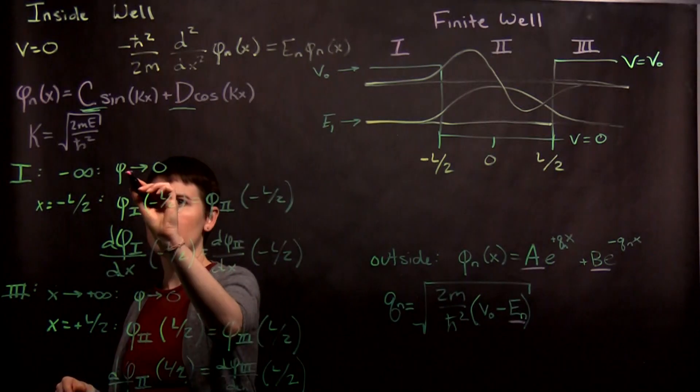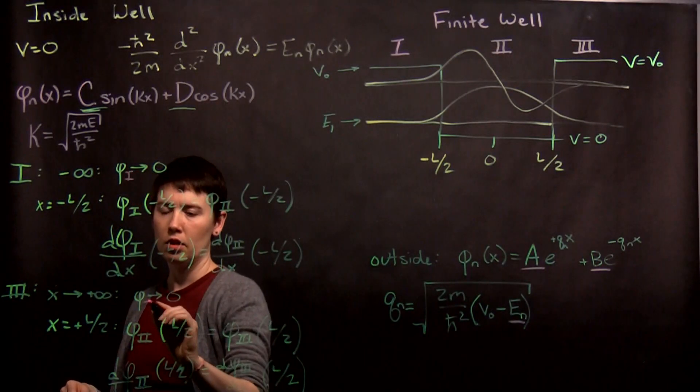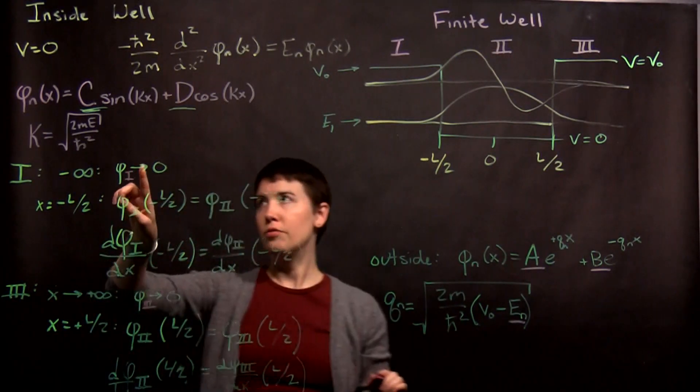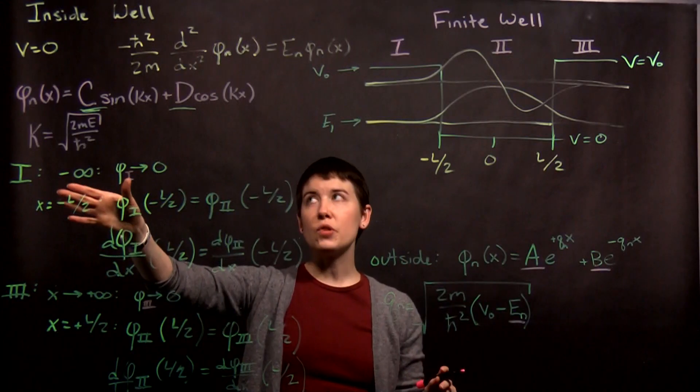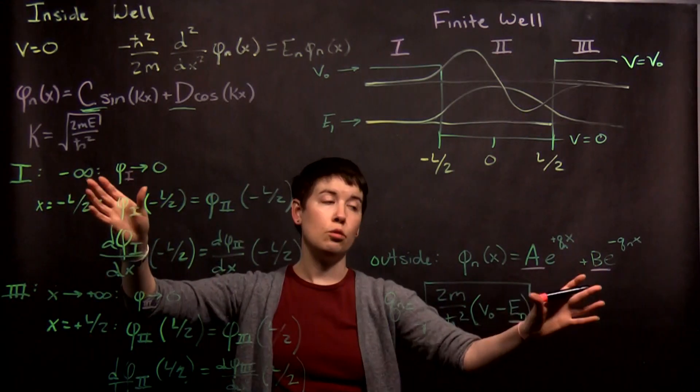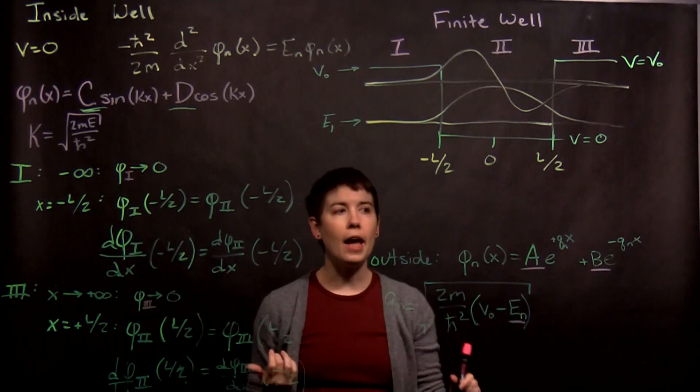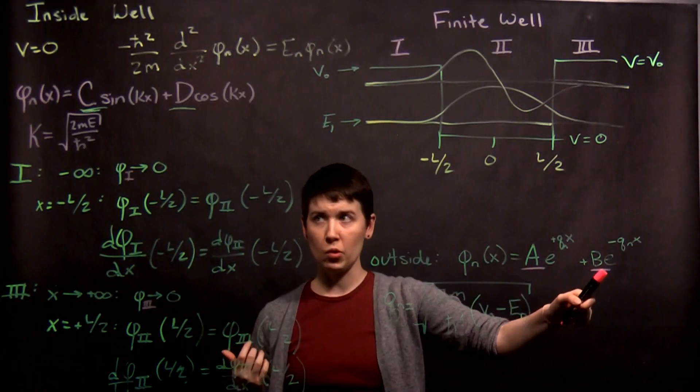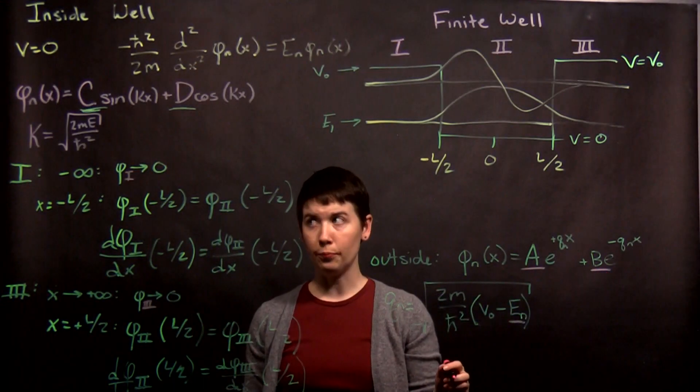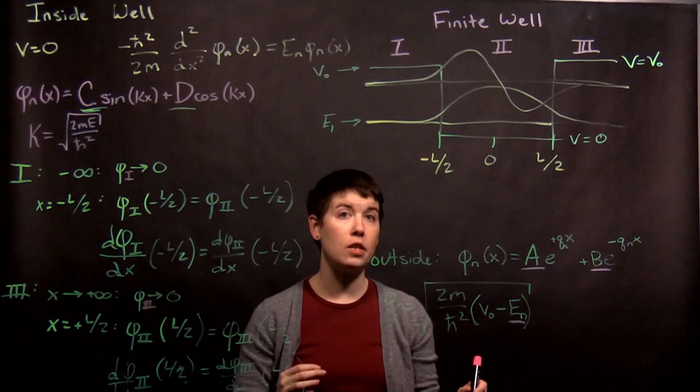So, when we are in region one, I didn't put a subscript on it, but technically this would then be phi one. So, this is the scenario outside the well over here. Now we can ask of these two terms when we're outside the well and we are going to negative infinity, what are they going to do?